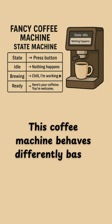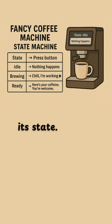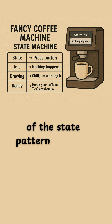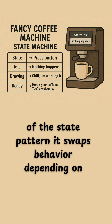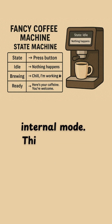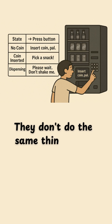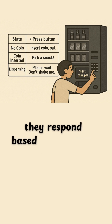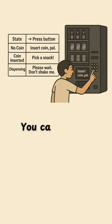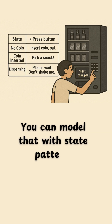This coffee machine behaves differently based on its state. That's the power of the state pattern — it swaps behavior depending on internal mode. Think vending machines: they don't do the same thing every time; they respond based on the state they're in. You can model that with the state pattern.